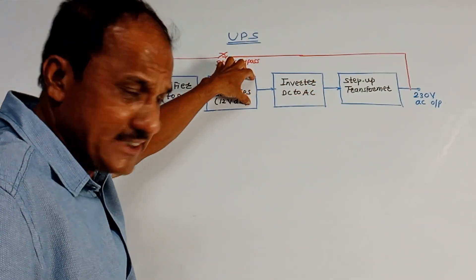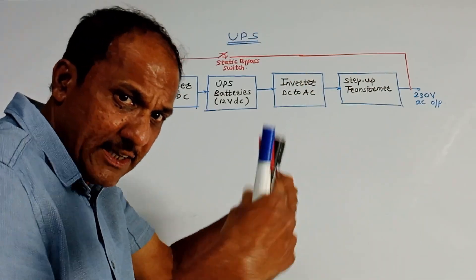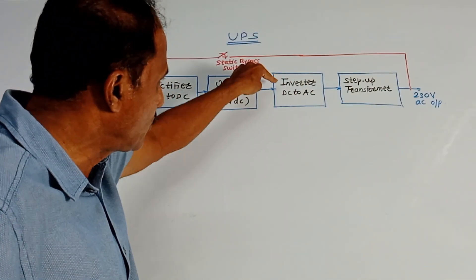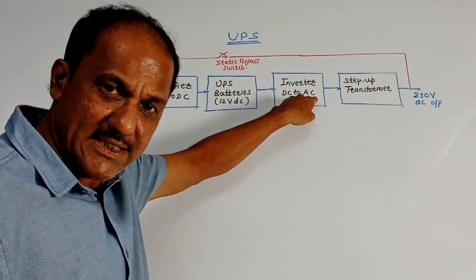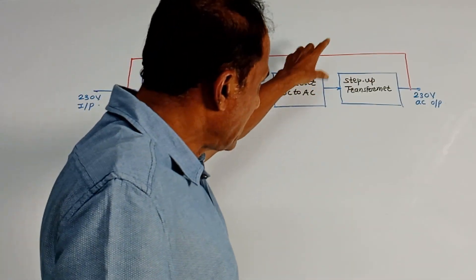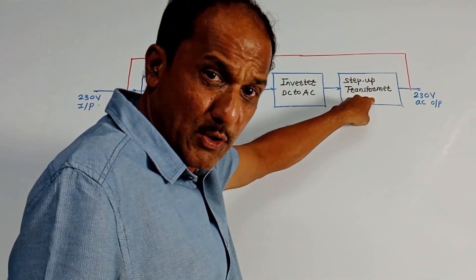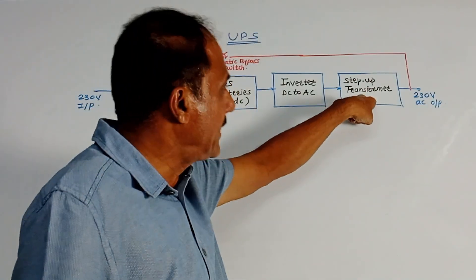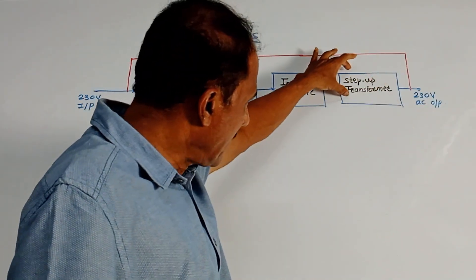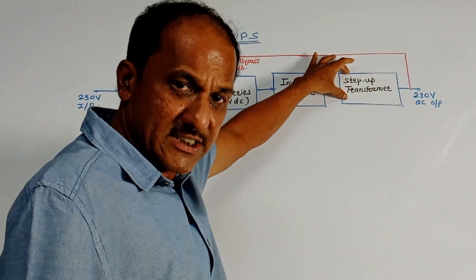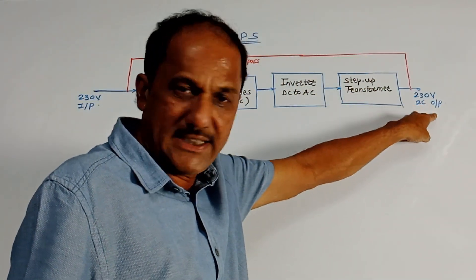The output of the battery is DC, and we want to convert this signal back into AC. So we use an inverter, which is a DC-to-AC converter. The output of this inverter is given to a step-up transformer, because we again want to generate a 230 volt AC output. So the output of this step-up transformer will be 230 volt AC.